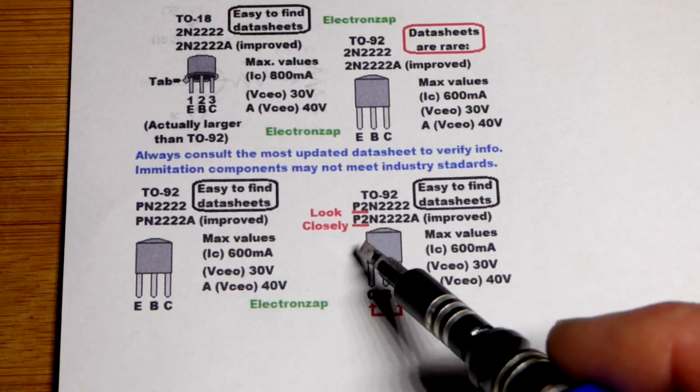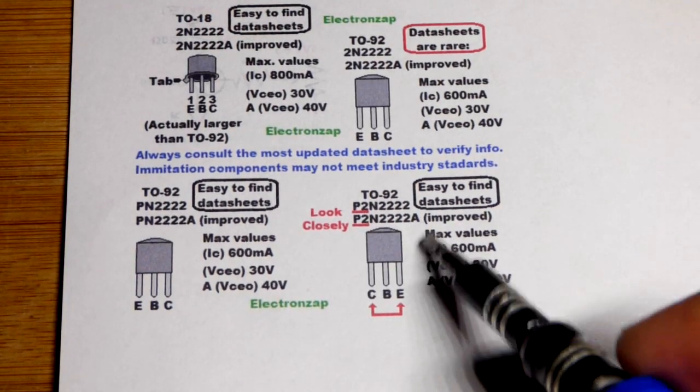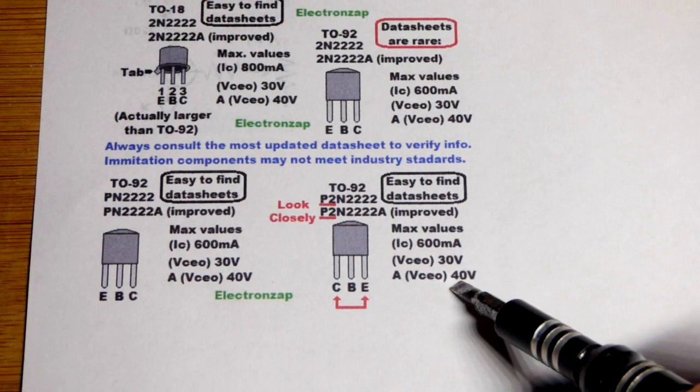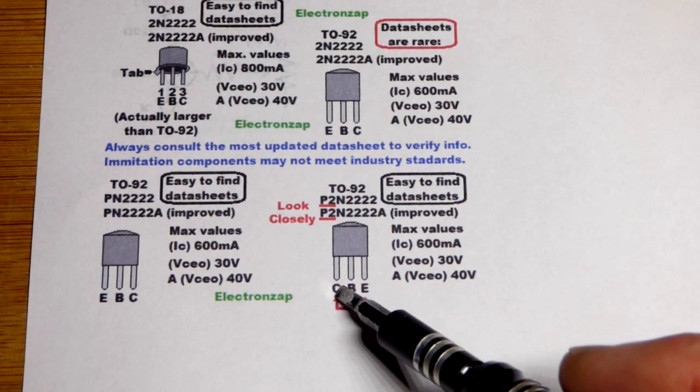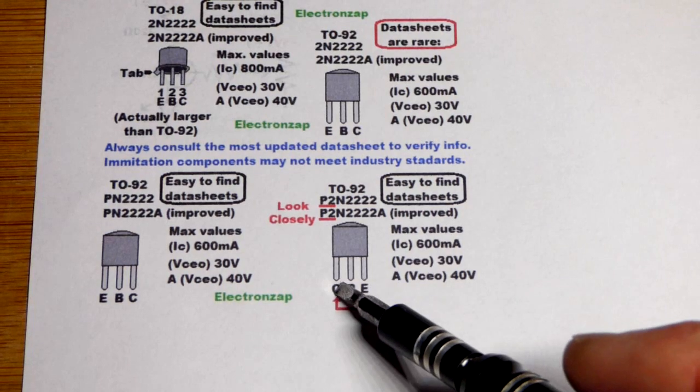And so the N2222 is basically the part number and then this is kind of like a variation or something. But yeah, P2, for either of those. That's very important. It looks like it's got the same electrical properties except for the emitter and the collector are in opposite spots.